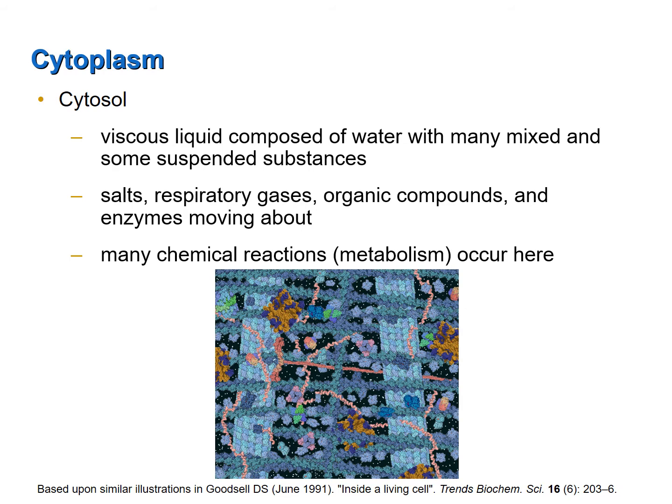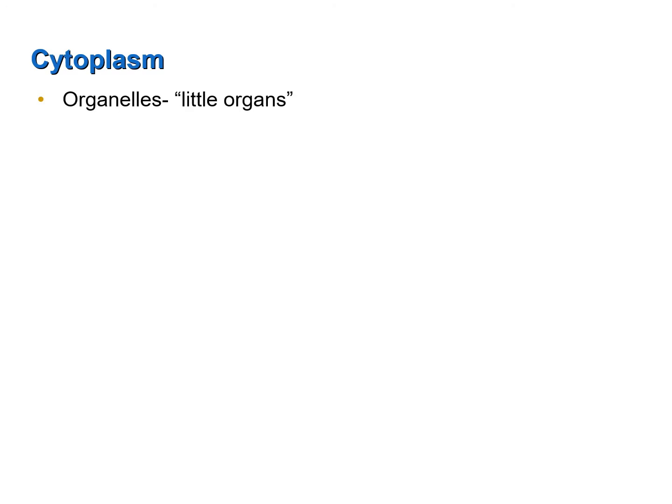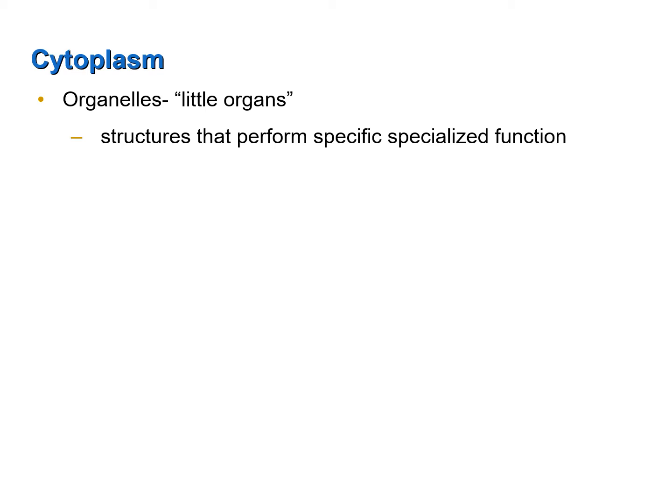This illustration of the cytosol is meant to illustrate the diversity and abundance of substances found within it. Also found in the cytoplasm, dispersed throughout the cytosol, are the organelles. Organelles literally means 'little organs.' These are specialized structures that perform specific functions — they are the metabolic machinery of the cell.